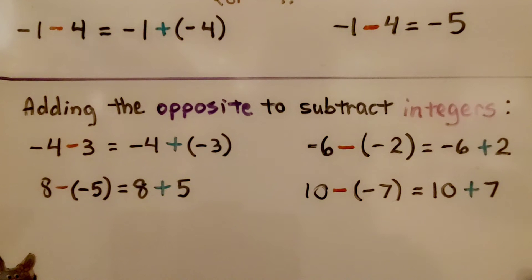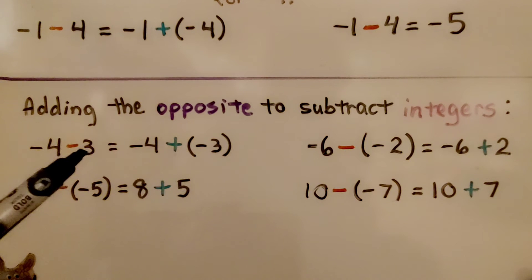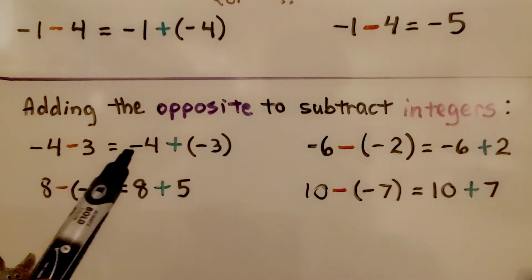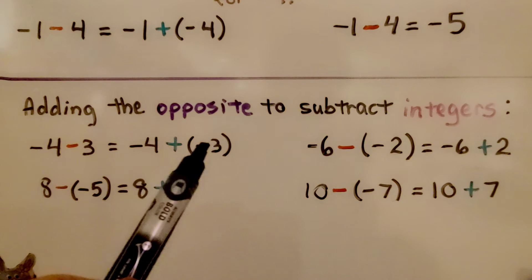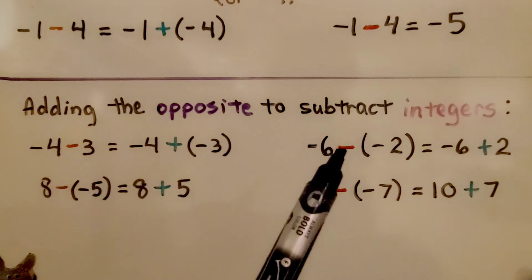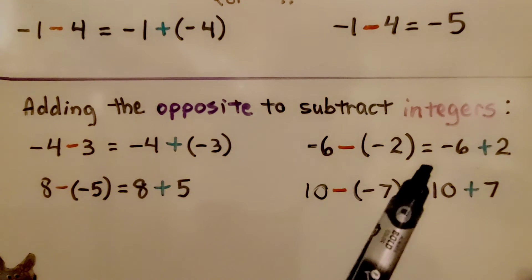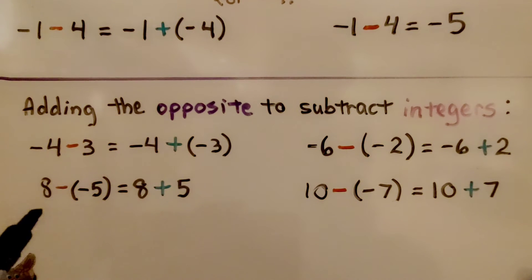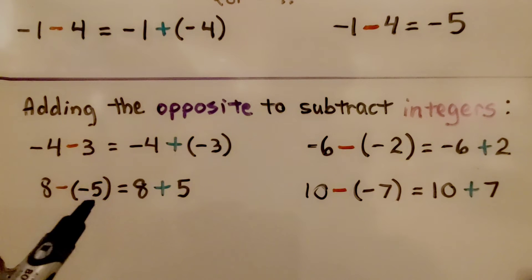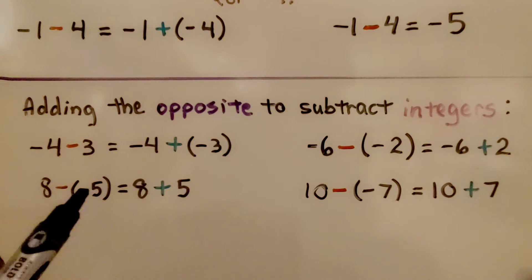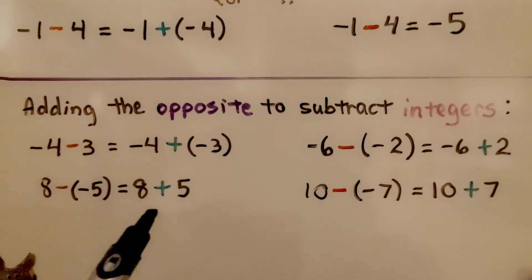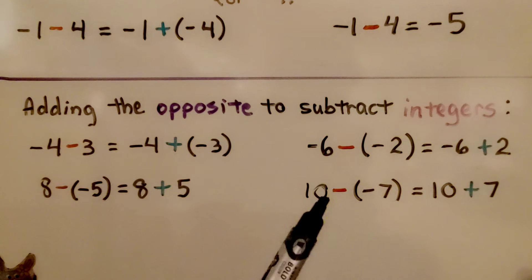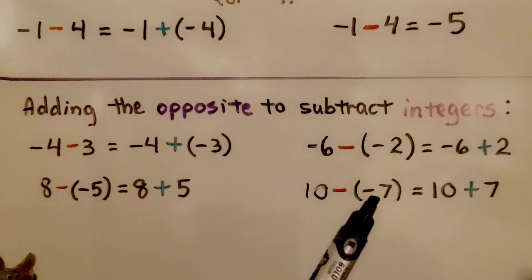Here's adding the opposite to subtract integers. If we have negative 4 minus 3, we can rewrite it as negative 4 plus a negative 3. For negative 6 minus a negative 2, we can rewrite it as negative 6 plus a positive 2. For positive 8 minus a negative 5, we can rewrite it as 8 plus 5. For 10 minus a negative 7, we can rewrite it as 10 plus a positive 7.